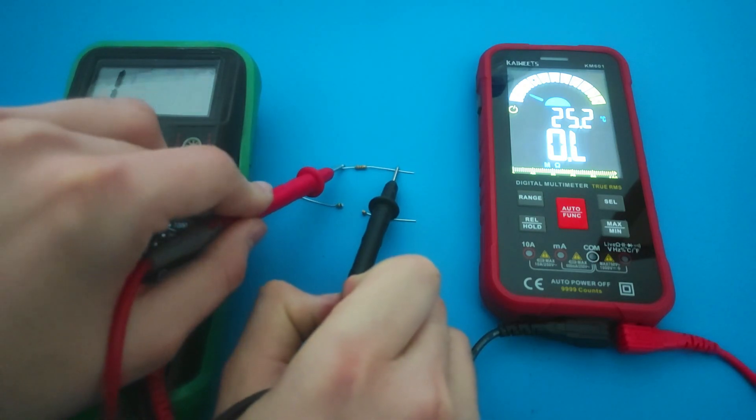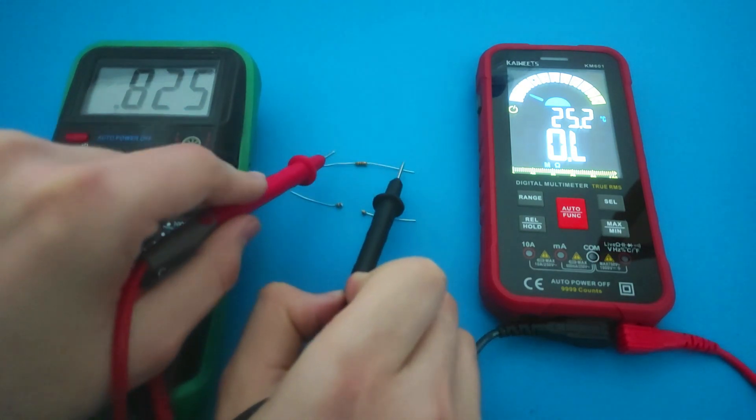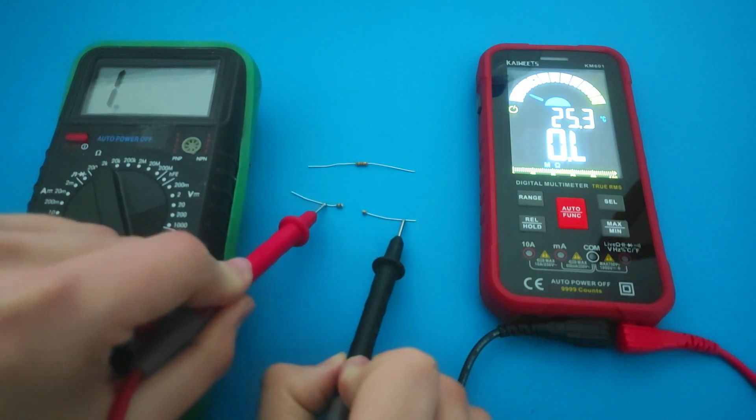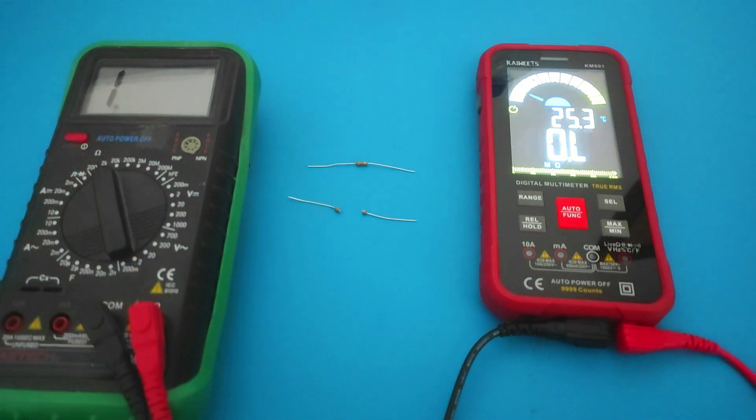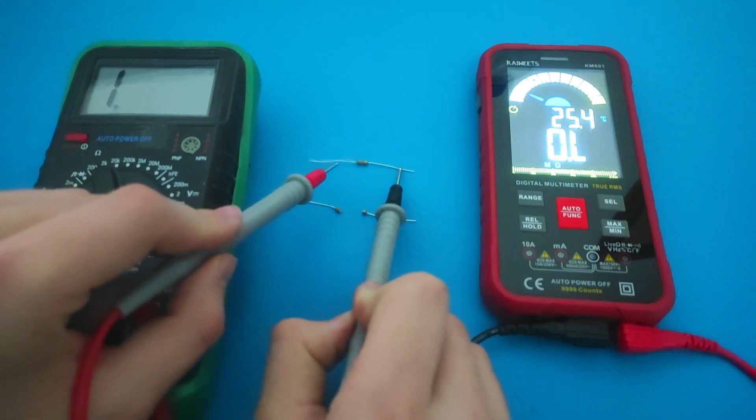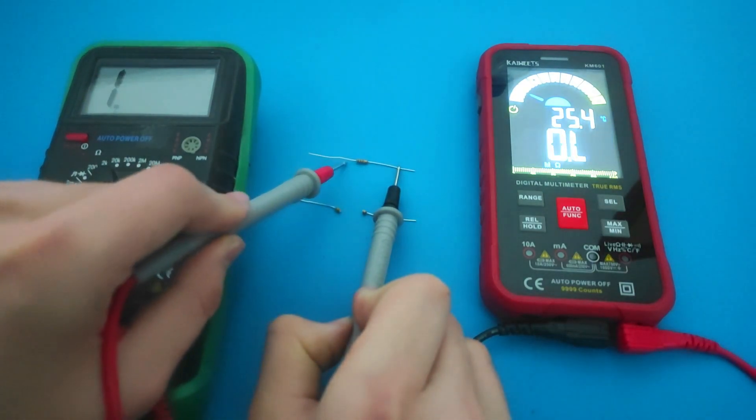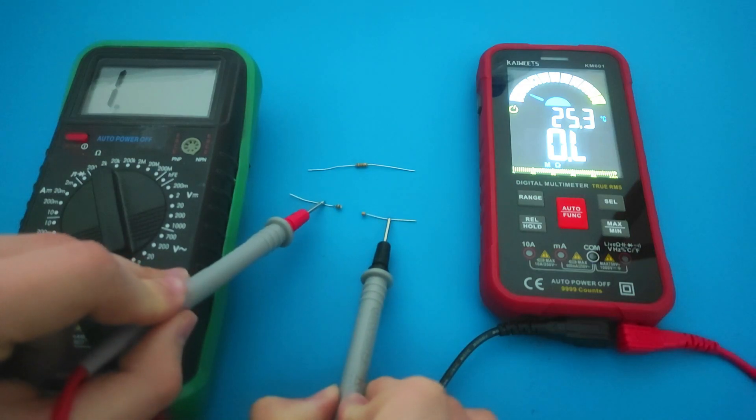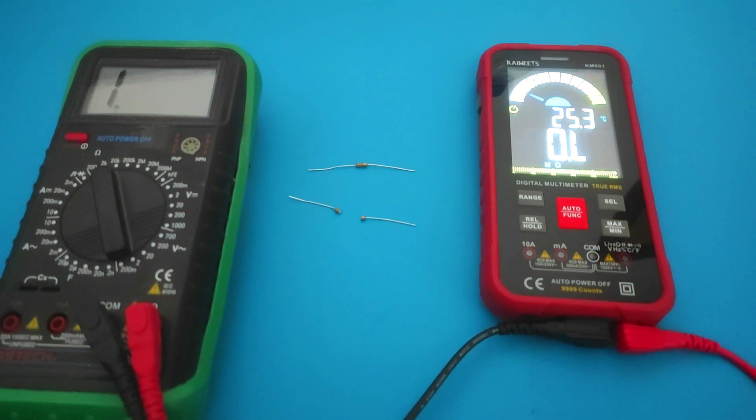An infinite resistance is an extremely high resistance, so high that current cannot go through. There is no connection between the two multimeter probes, and the multimeter thinks the conductive pathway has been interrupted. You then get OL on the multimeter's screen.